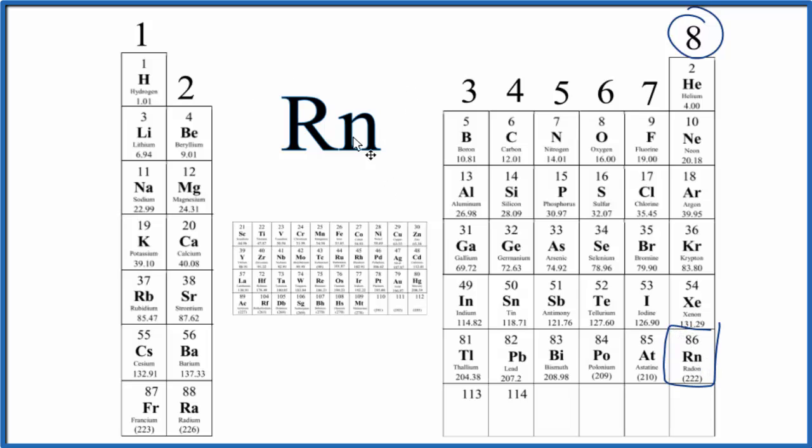So to draw the Lewis structure for radon, we'll put 8 valence electrons around it in pairs. So this is the Lewis structure for Rn, radon.